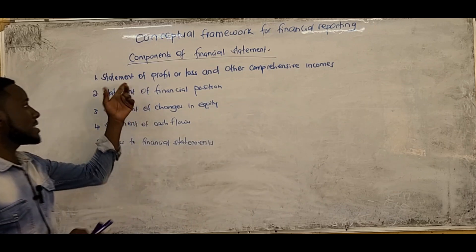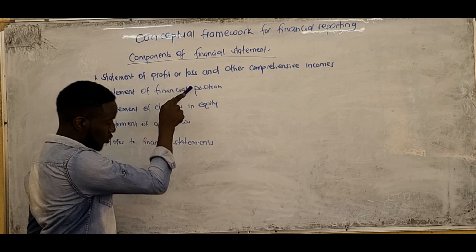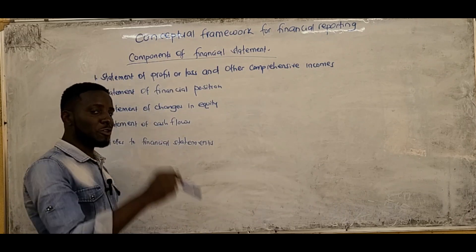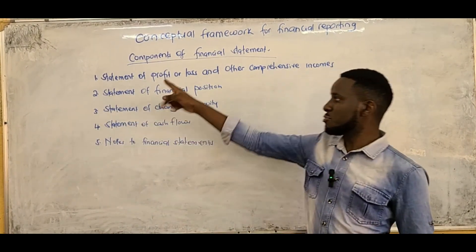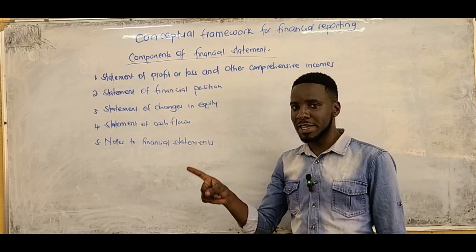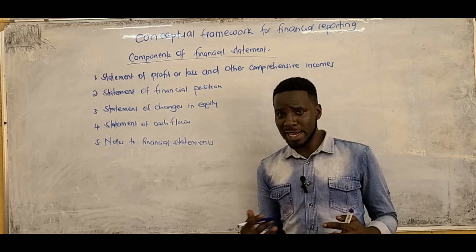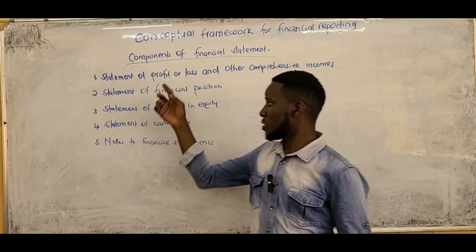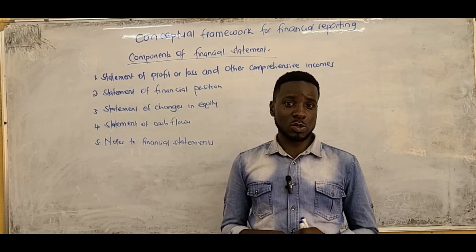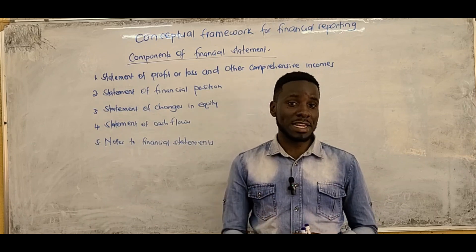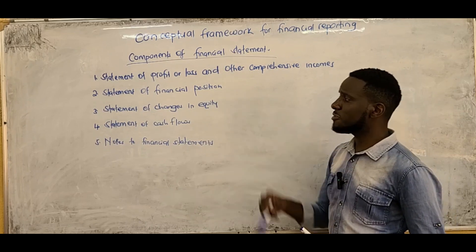The Statement of Profit or Loss and Other Comprehensive Income — formerly called the income statement — establishes the profitability of the business. Note it is 'profit or loss,' not 'profit and loss,' because a business cannot make both at the same time. At the end, you calculate the net profit.